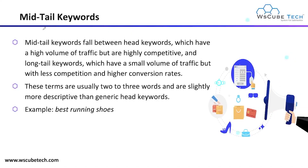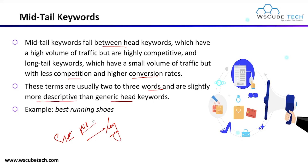Next we have mid tail keywords, which fall between short tail and long tail keywords. These have a smaller volume of traffic, but with less competition and a higher conversion rate. These terms are usually two or three words and are slightly more descriptive than your generic head term. For example, if your generic term is 'running shoes,' adding a suffix or prefix gives you 'best running shoes' or 'running shoes for women' — these are your mid tail keywords.